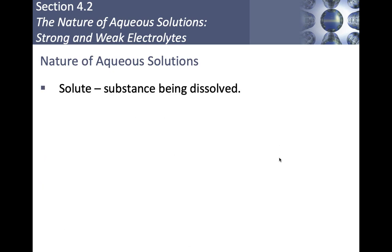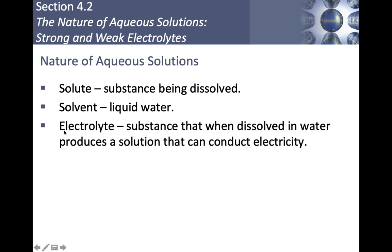Moving to section 4.2: solutes and solvents in aqueous solutions. A solute is the substance being dissolved — in our case it will always be dissolved in water. The solvent is our liquid water, our dissolving mechanism. Electrolytes are substances that, when dissolved in water, produce a solution that can conduct electricity. Some substances conduct electricity when dissolved, and others do not. If it conducts electricity, we consider it an electrolyte, and there are two types: strong and weak.